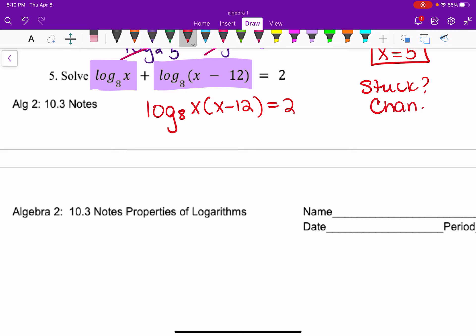So we're going to change forms from logarithm form to exponential. Our base here is 8. If you remember, our base is 8. Our exponent is 2. So these two switch sides. And then this becomes x times x minus 12. Now we can solve this.